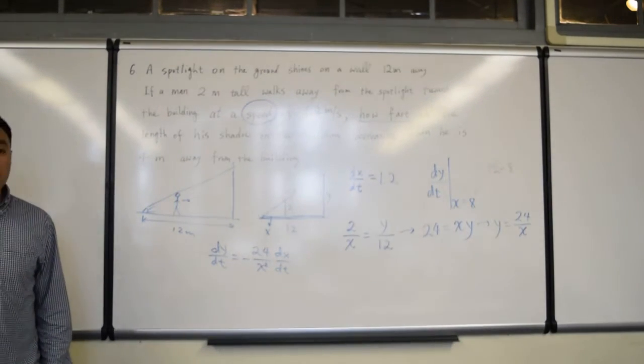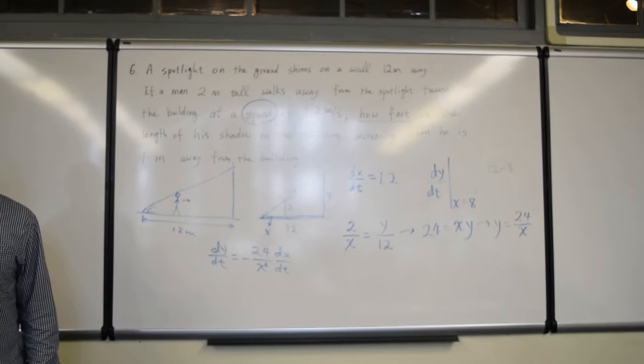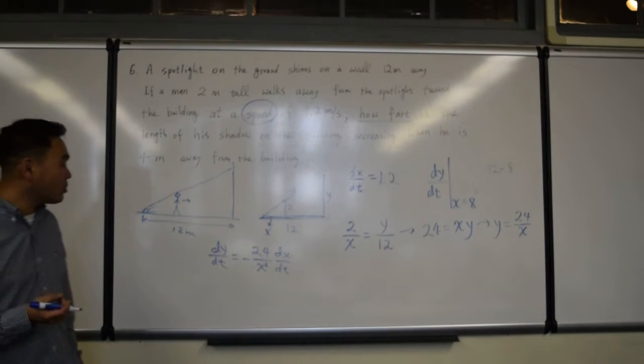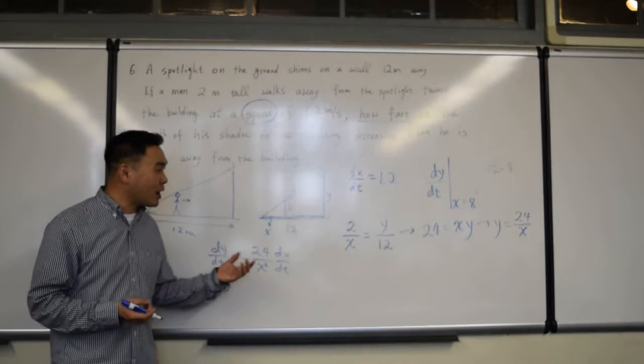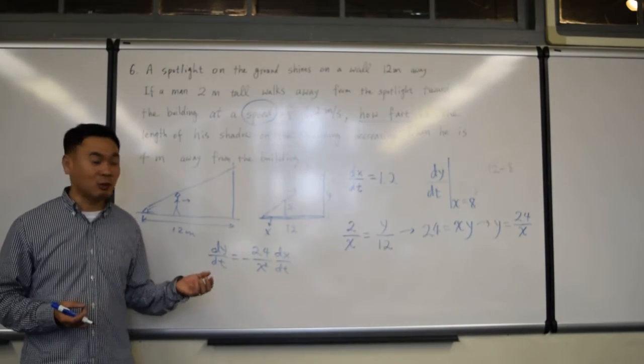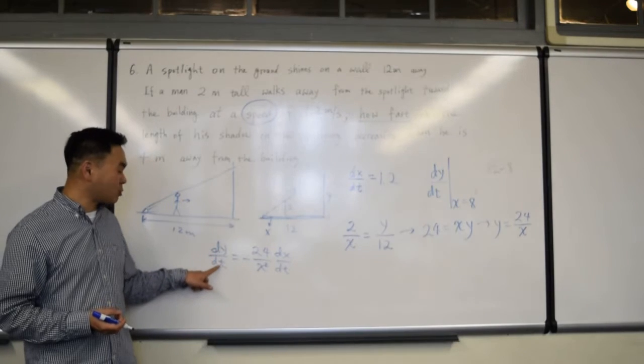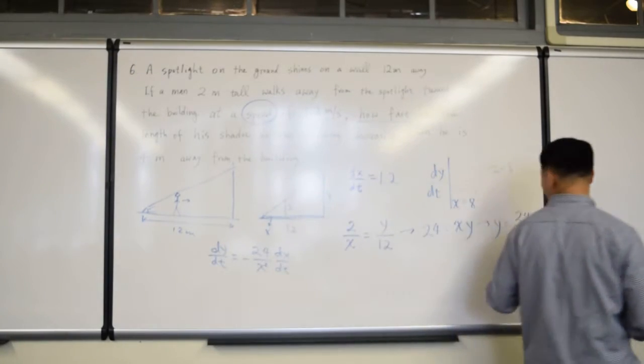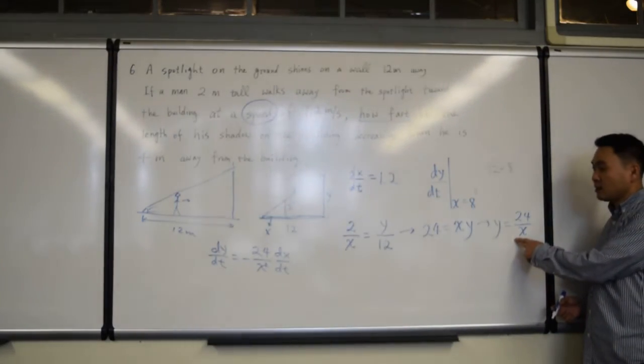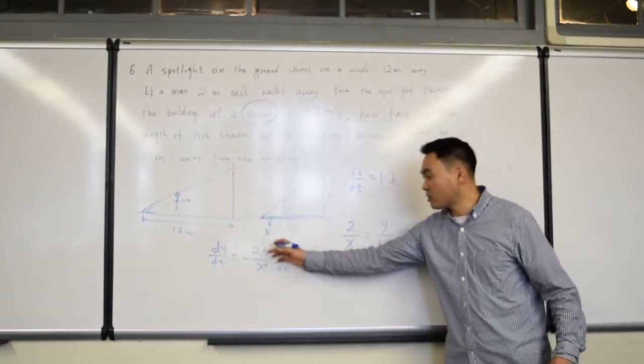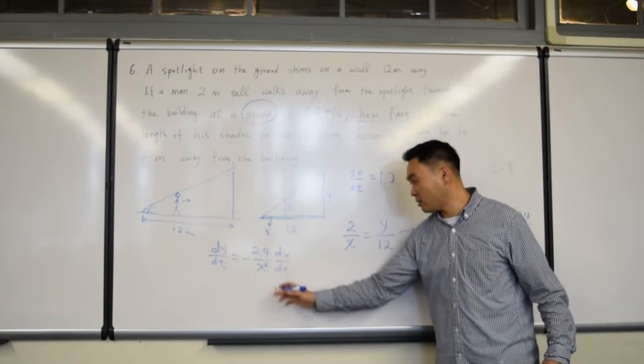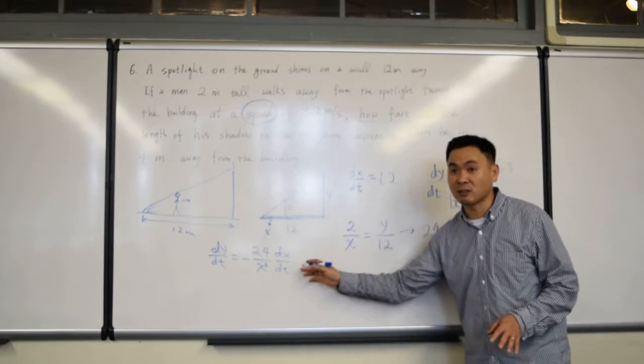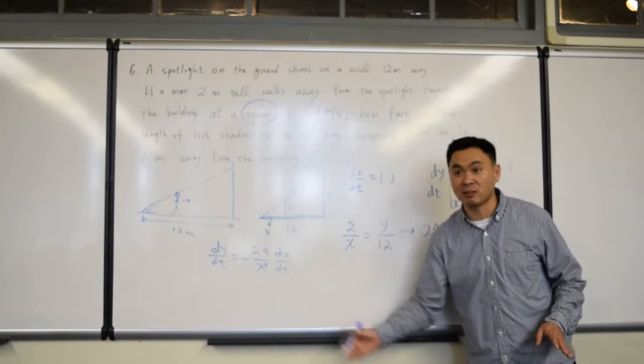And remember, here, both x and y change with respect to time, okay? So, whenever you differentiate both sides by t, both x and y are functions, therefore, you have to use the chain rule. So, derivative of y with respect to t is dy/dt. Not only that, if you differentiate 24 over x by t, its derivative of 24 over x is negative 24 over x squared. And then, dx, which is the inside function, has to be pulled out and differentiated. That's where this dx over dt comes from.